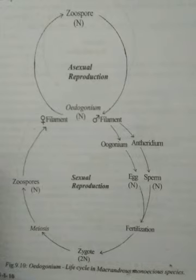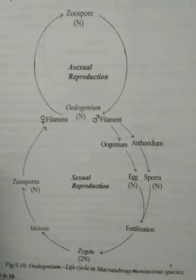Growth takes place by division of intercalary cells of the filament. A cell cap is formed by one of the daughter cells in each division. This is a peculiar feature of Oedogonium.